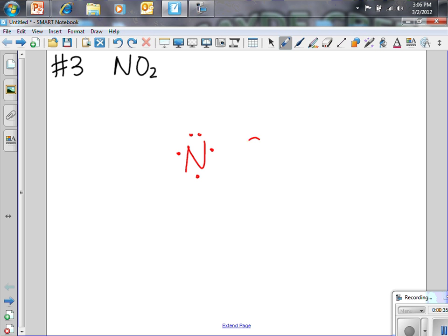And I have to draw my two oxygens, the nitrogen dioxide, which each have six valence electrons.